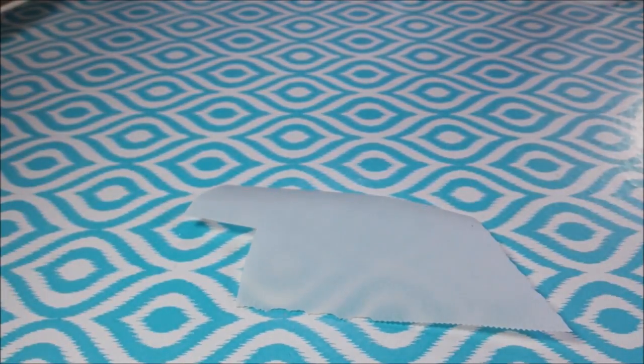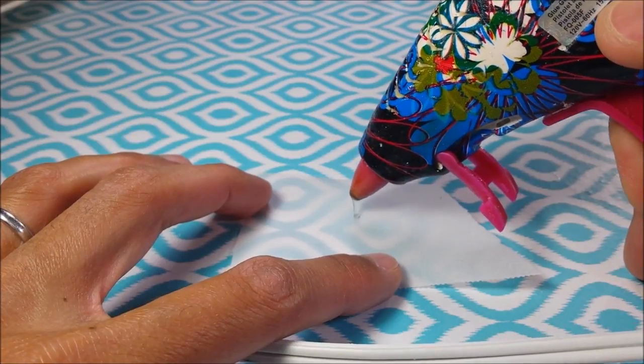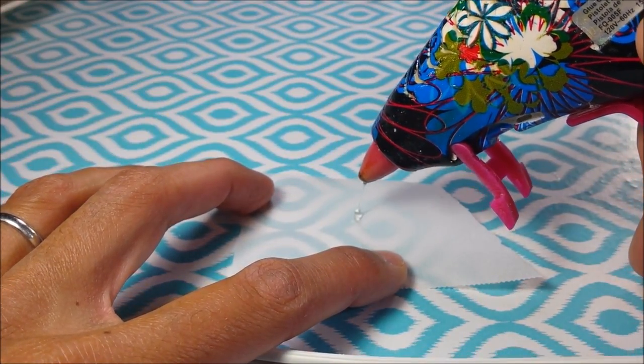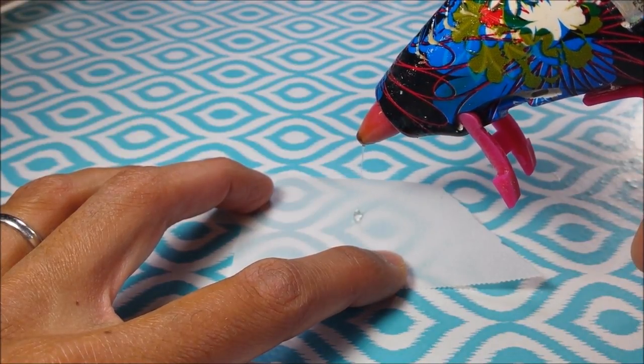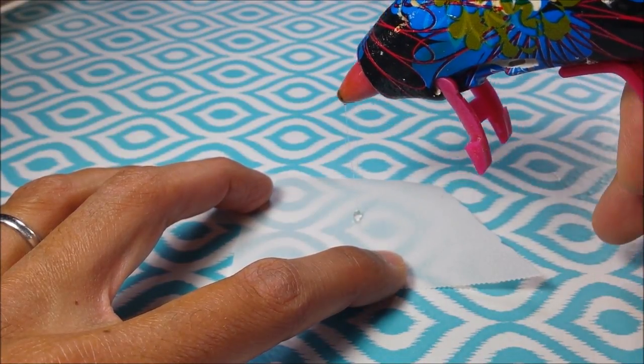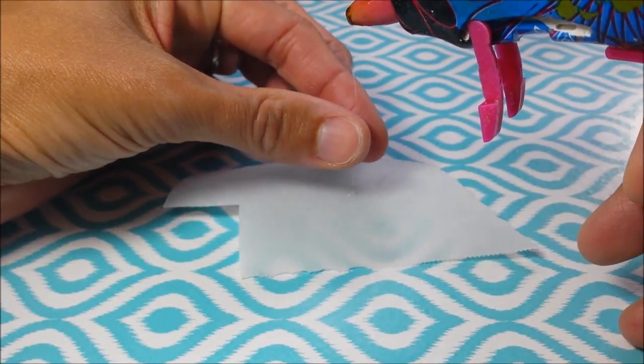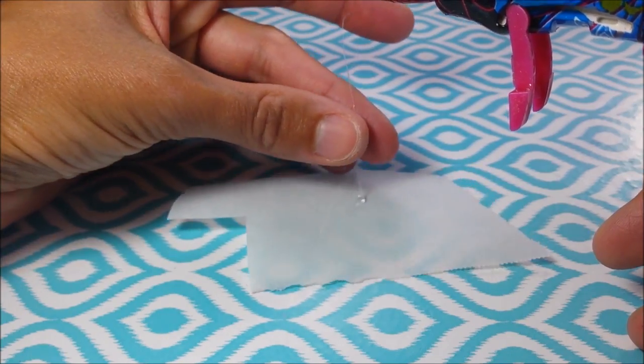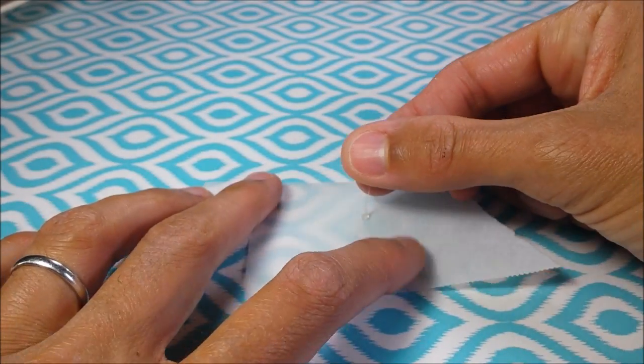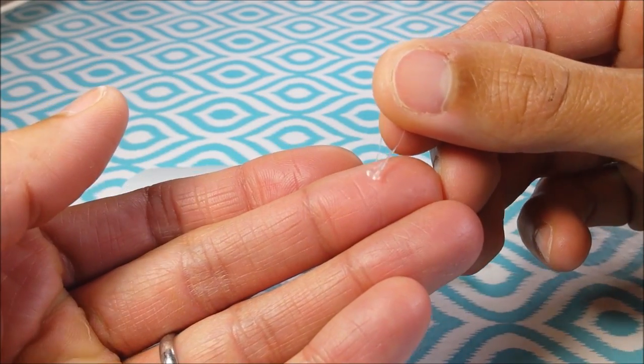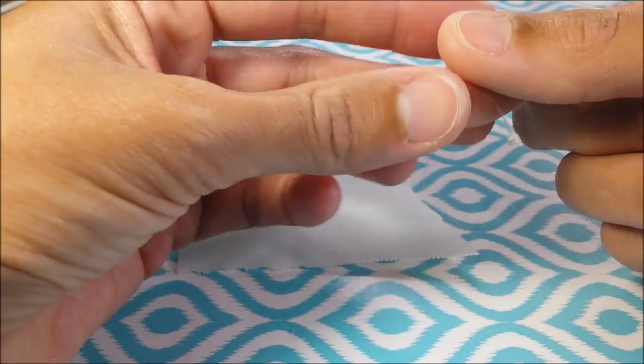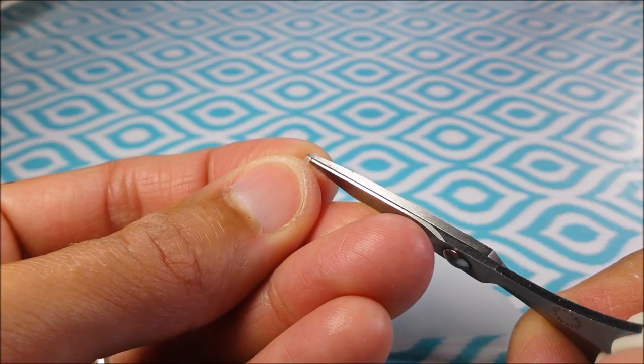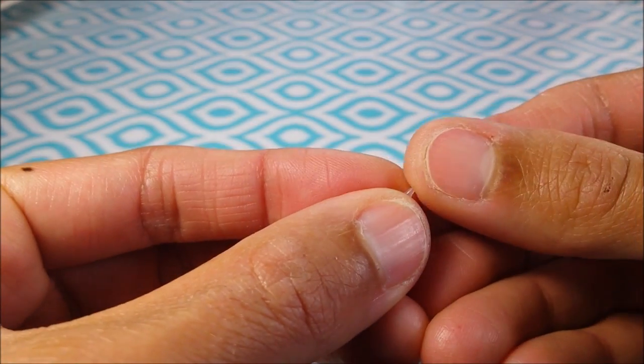And while it's drying, I can squirt out a tiny bit of hot glue. Cut off a section from a glue.